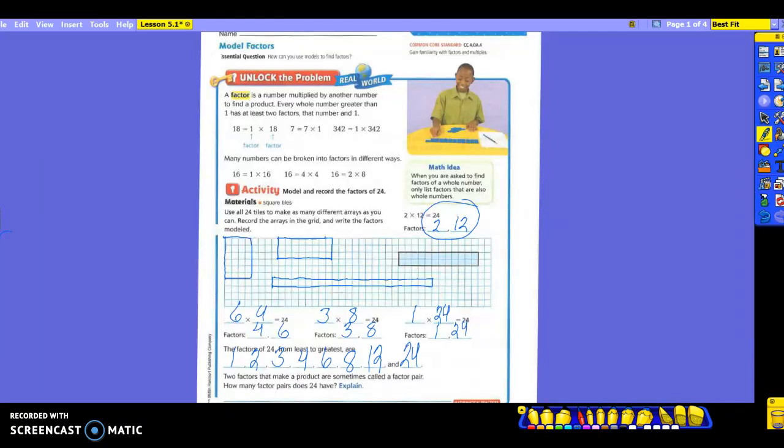Now, something we didn't talk about when it says it down here. Two factors that make a product are sometimes called a factor pair. That would be like 4 and 6, that would be a factor pair because they would make 24. Three and 8 would be a factor pair. One and 24 would be a factor pair. So it's asking us how many factor pairs does 24 have? How many different pairs of factors did we come up with? Four of them. So we're going to say four pairs, and then you're going to list them. You're going to have 1 and 24, 2 and 12, 3 and 8, and 4 and 6.